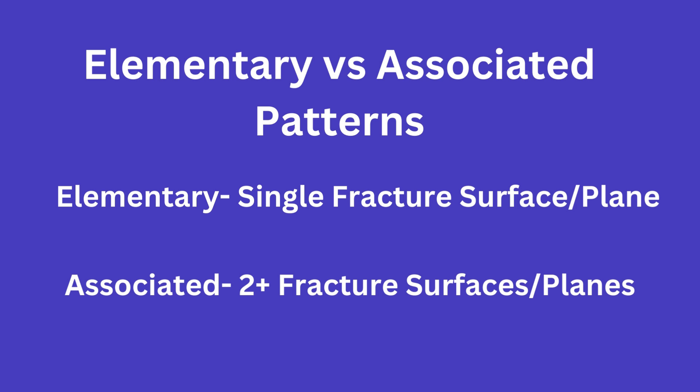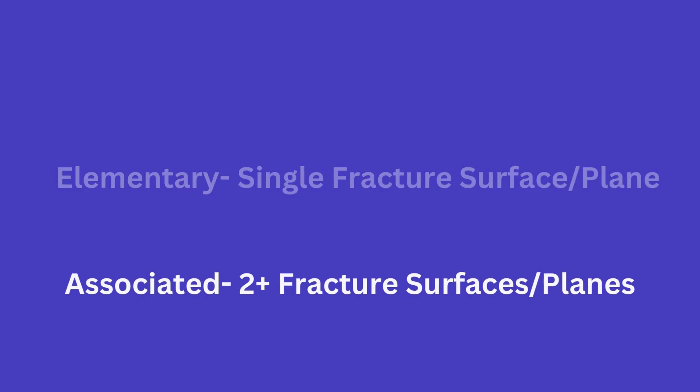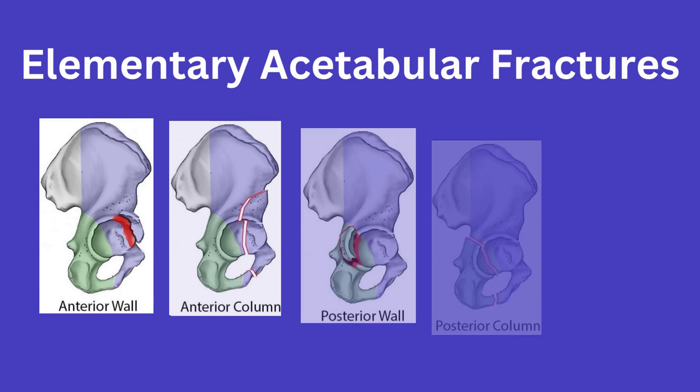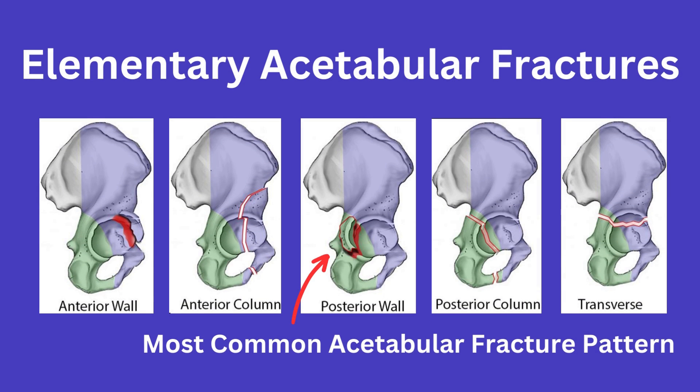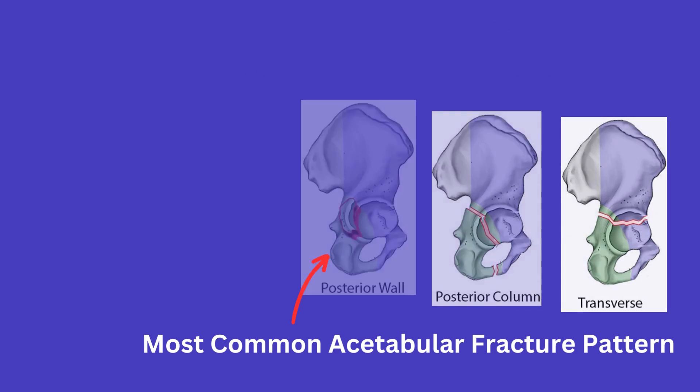Going over the elementary types first, the 5 elementary patterns include anterior wall, anterior column, posterior wall — which is the overall most common type of acetabular fracture — and then posterior column, and transverse. You can see each here.